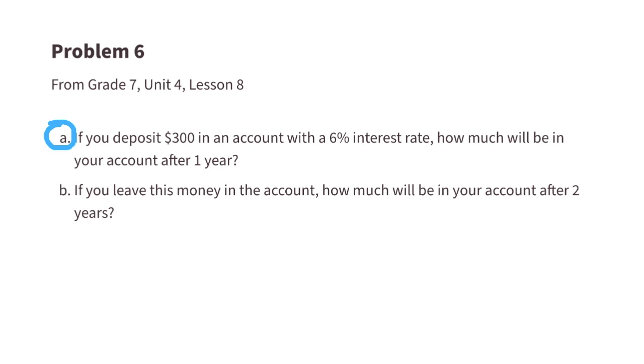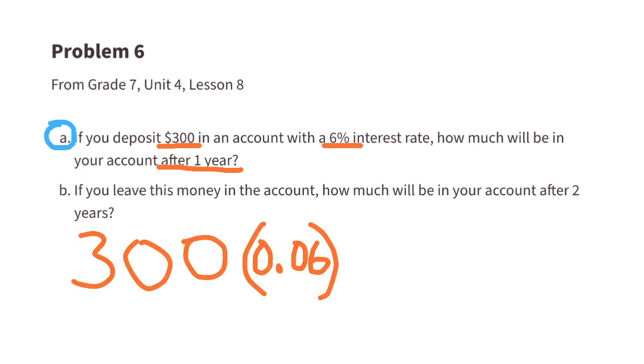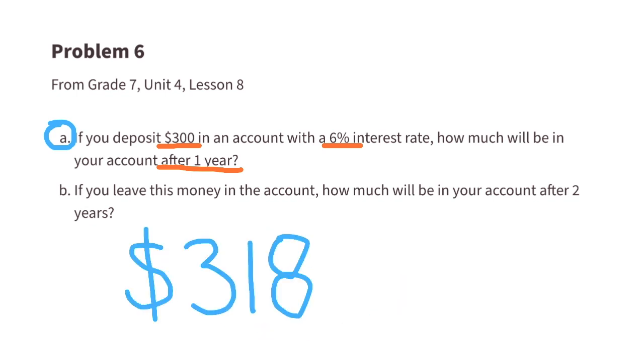That's $300 times 0.06, and that's for one year. That would be $18 worth of interest in one year. So $300 plus $18 equals $318.